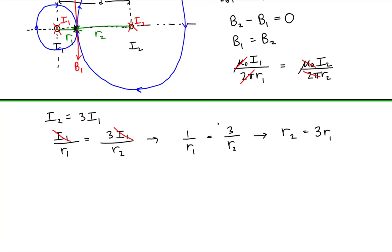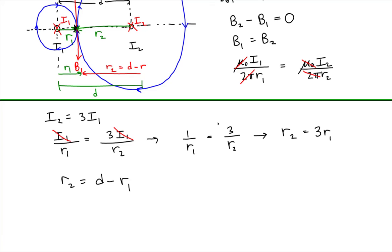To determine R1, we recognize that R2 = D − R1, since R1 and R2 together span the full separation D. Substituting into R2 = 3R1: D − R1 = 3R1, which gives 4R1 = D, so R1 = D/4.